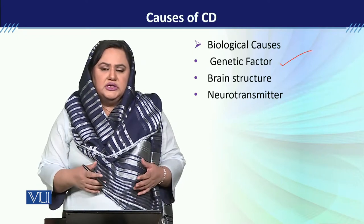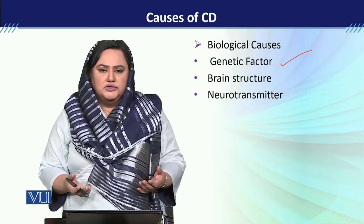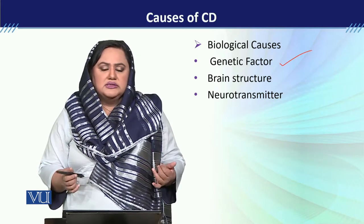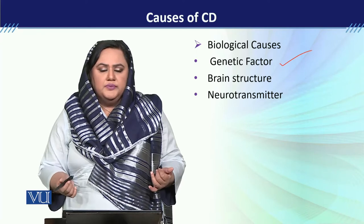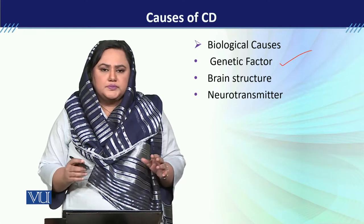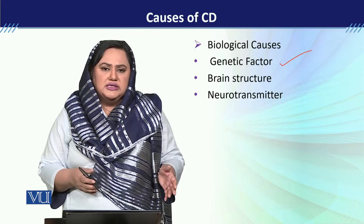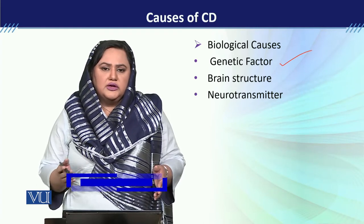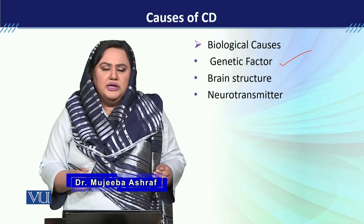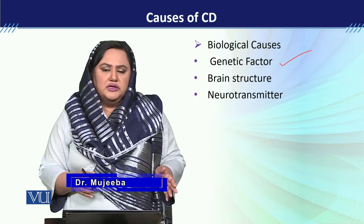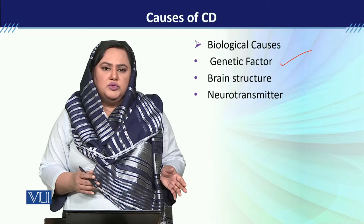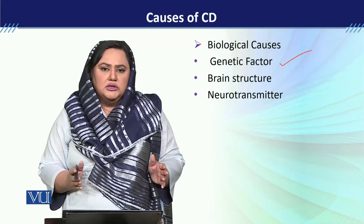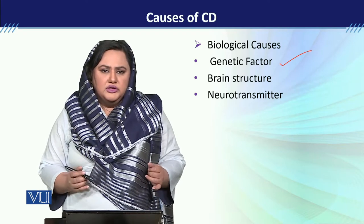Number one is the genetic factor. When we talk about bipolar disorder, if it runs in a family, there are many chances it appears in the next generation. For identical twins, statistically there is a 40% chance that if one twin has cyclothymic disorder, the other will also have it. First-degree relatives show a ratio of 5 to 10% compared to the general population, where the ratio is 1 to 2.6%. So genetics is a very big factor considered in cyclothymic disorder.